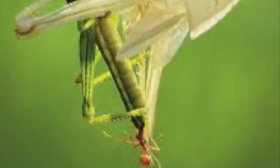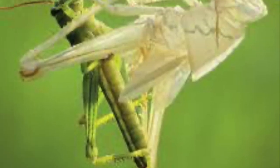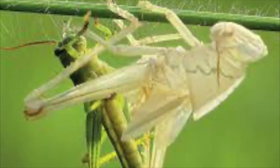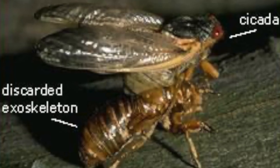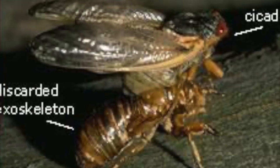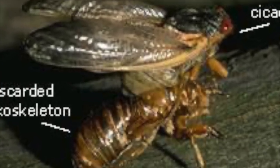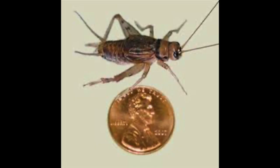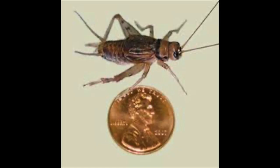Once a nymph outgrows its exoskeleton, it will go through a process called molting. The nymph molts and replaces its old skin, or exoskeleton, with new skin. The new skin will harden and become the new exoskeleton. This will happen many times until the insect finally becomes an adult.